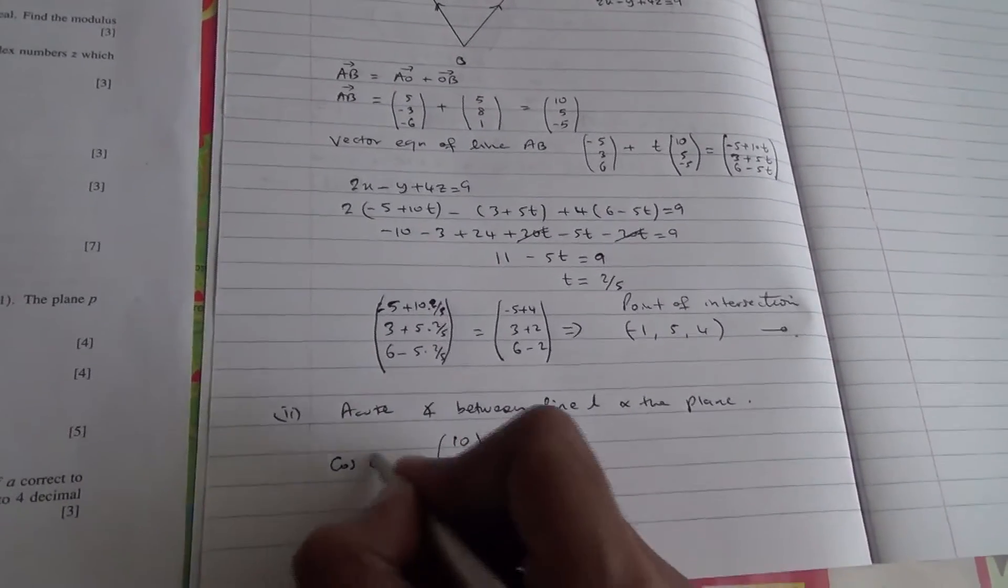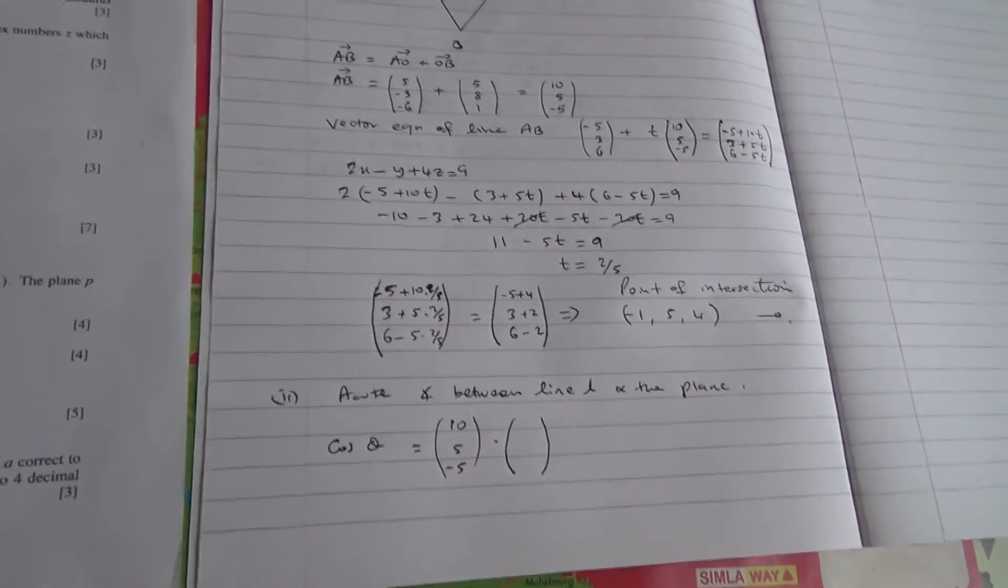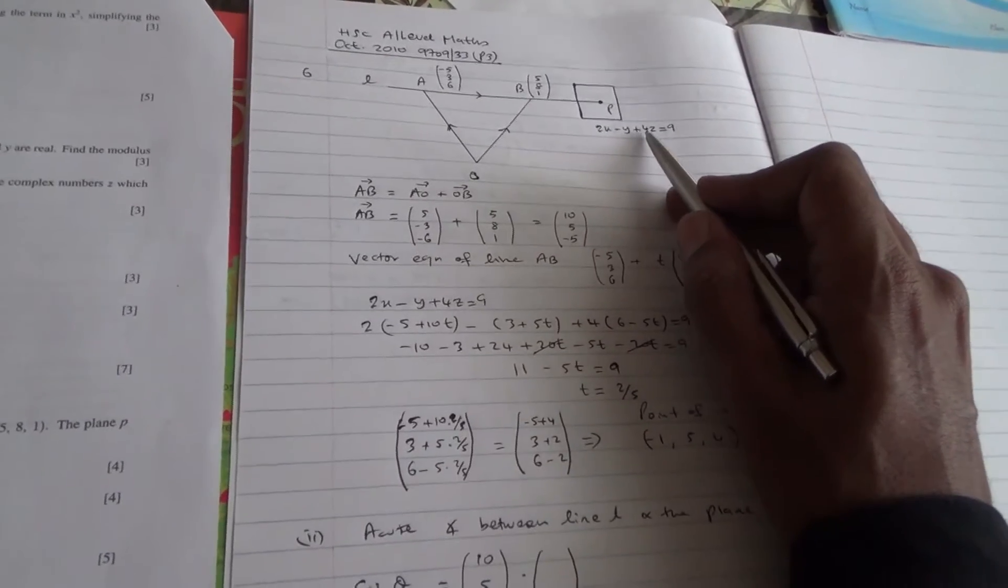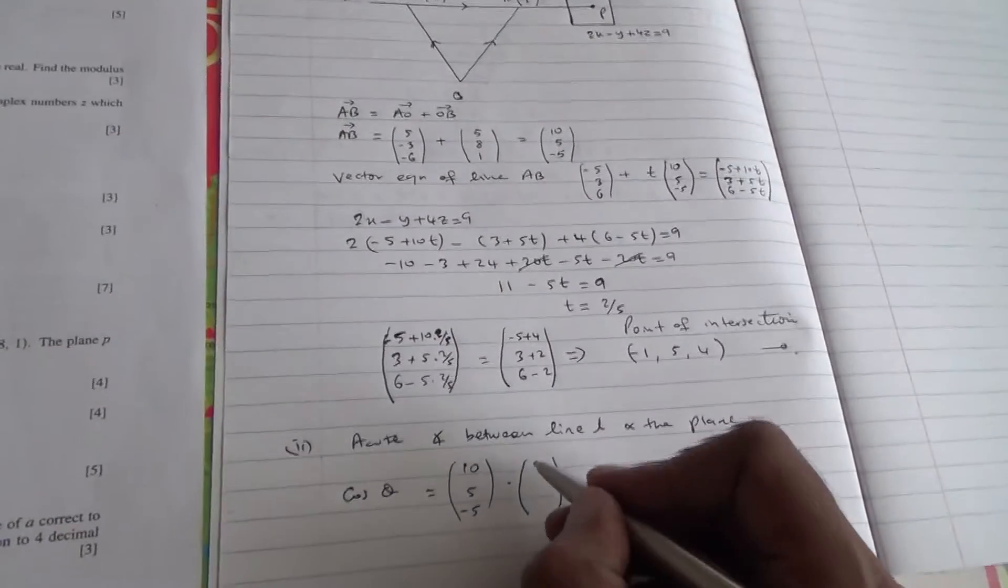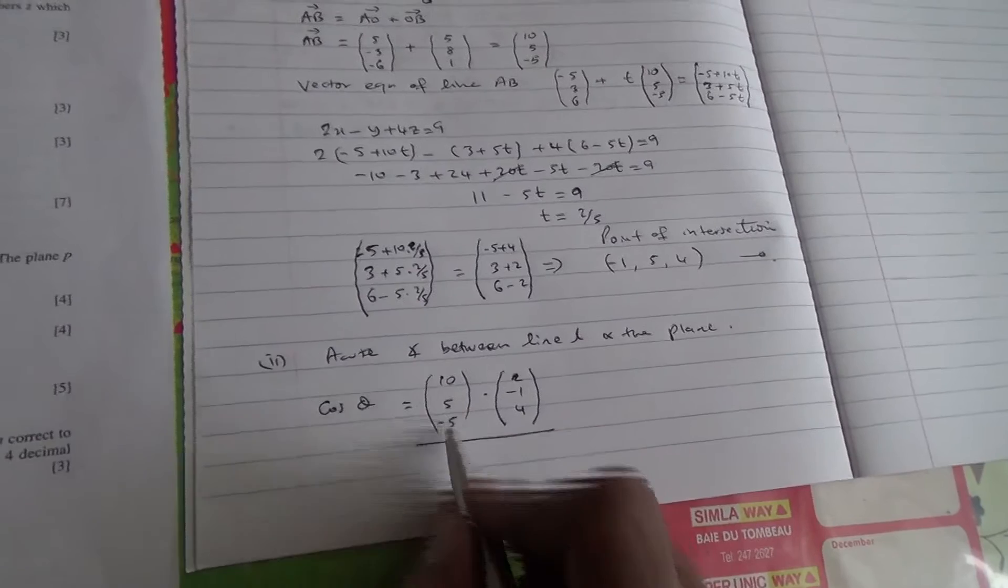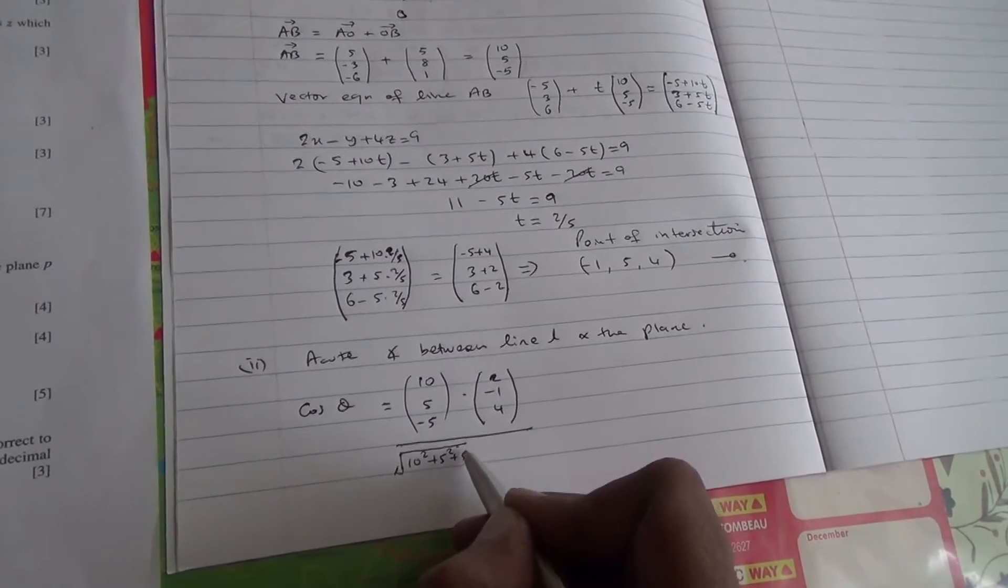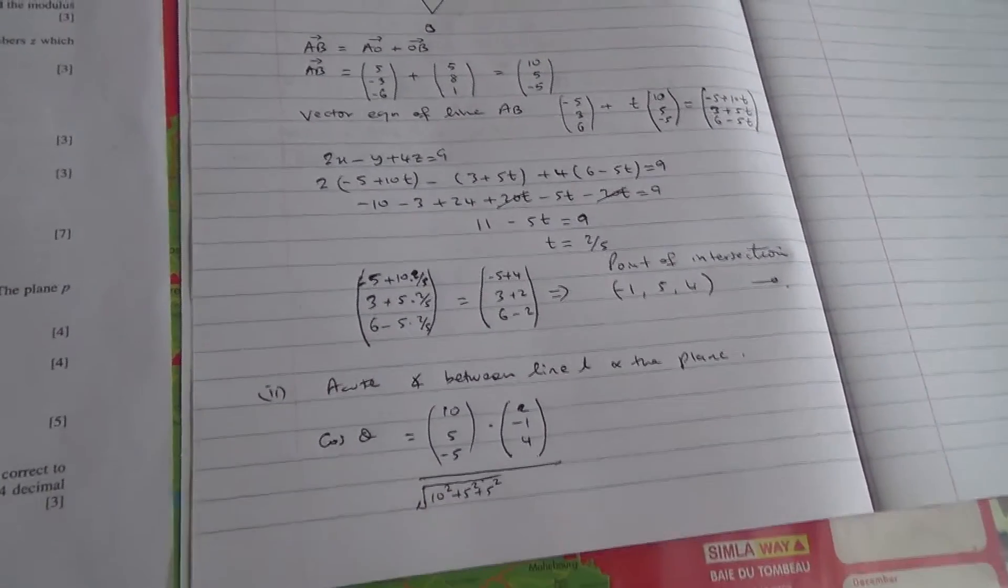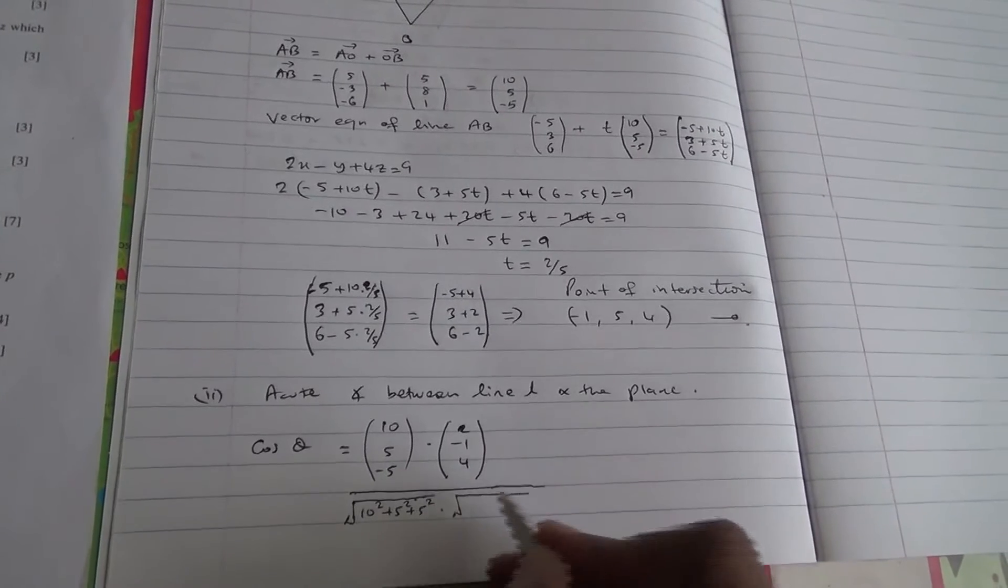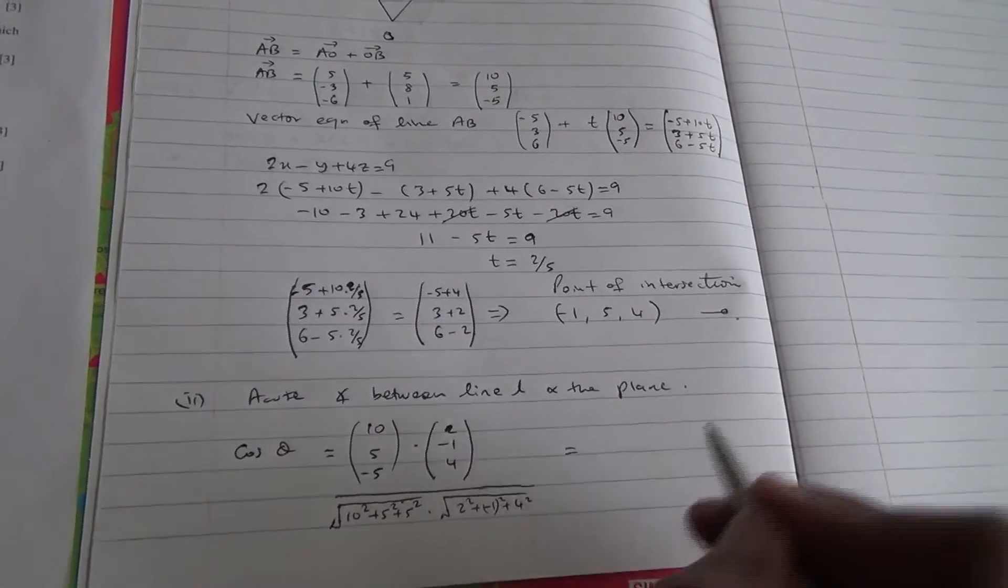Vector equation of line L was (10, 5, -5), so we're going to be using that. The acute angle, maybe we can say cos θ is going to be the acute angle times the direction vector, or the normal to the plane. The plane has equation 2x - y + 4z, so (2, -1, 4), divided by the square root of all of that, times the sum of 10² + 5² + 5², times 2² + (-1)² + 4².